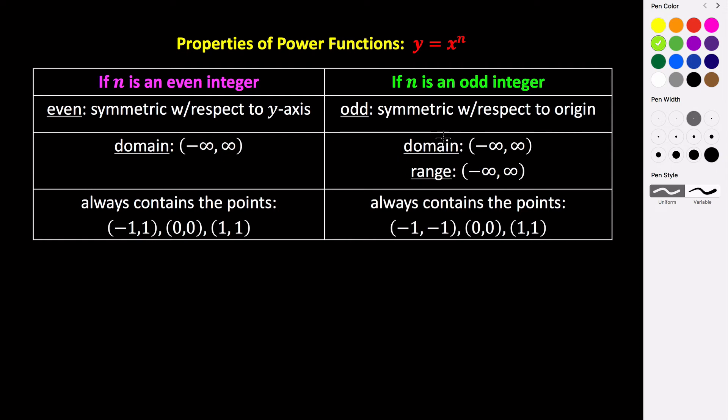If it is an odd power function, we know that both the domain and the range are all real numbers, because they start, they look similar to like a cubic, right, if you think about a cubic, they'll start low and end high.